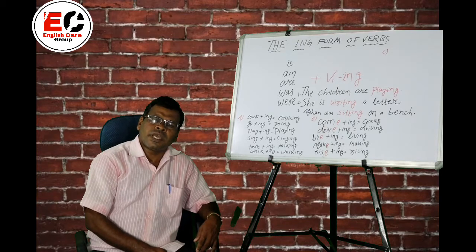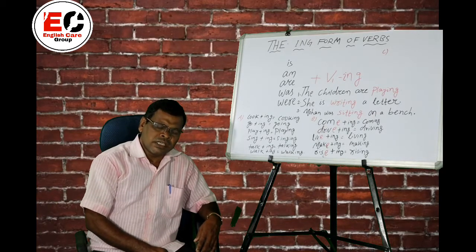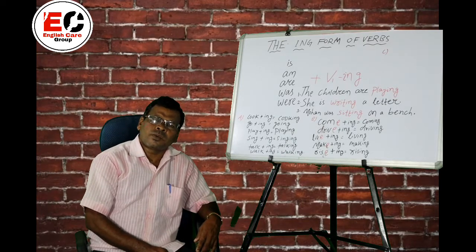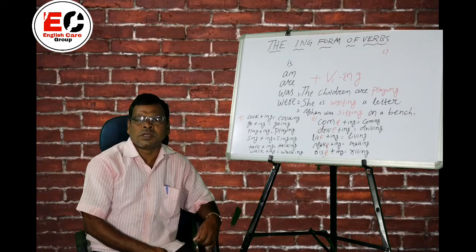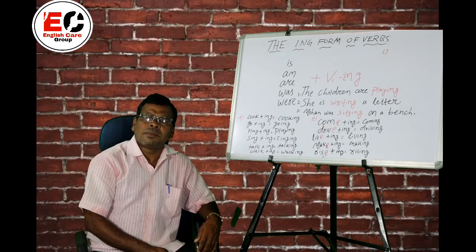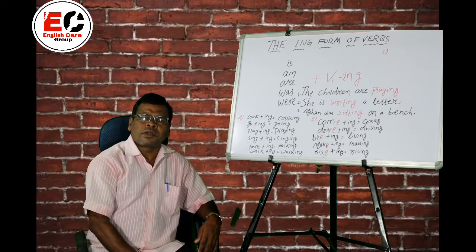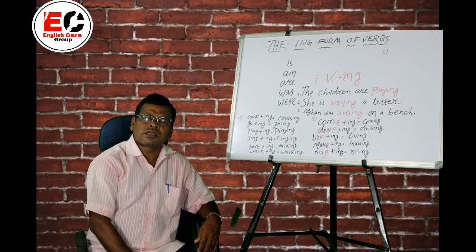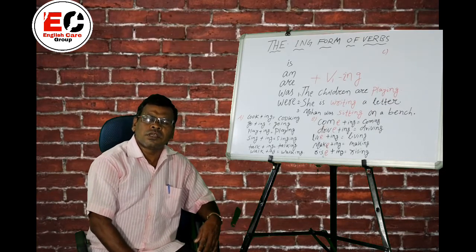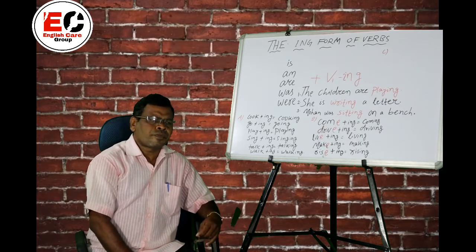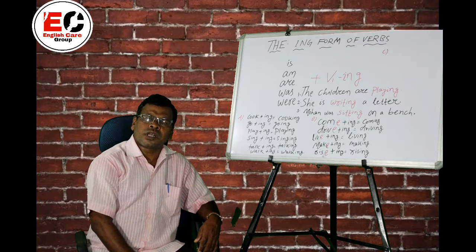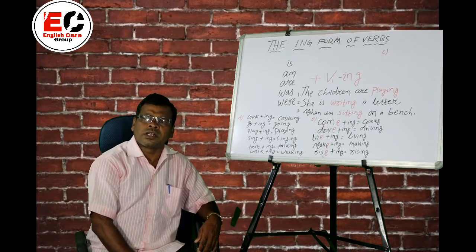Skip — S-K-I-P, S-K-I-P-P-I-N-G, skipping. Swim — swimming. The ING form of verbs is used in present continuous, past continuous, future continuous, present perfect continuous, past perfect continuous, and future perfect continuous tenses.